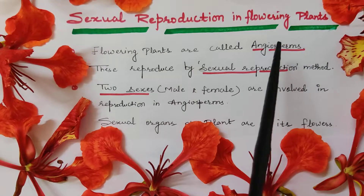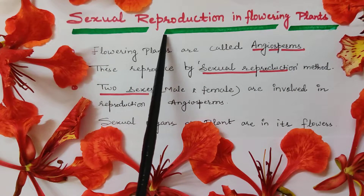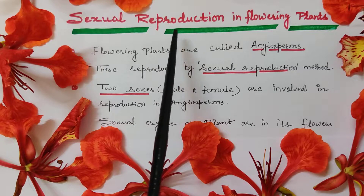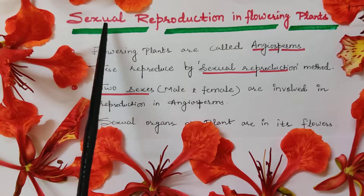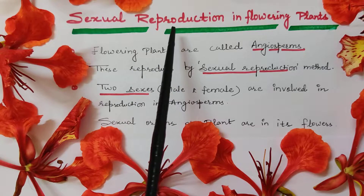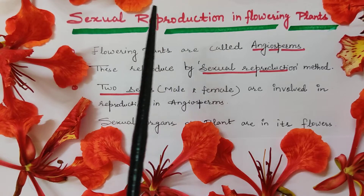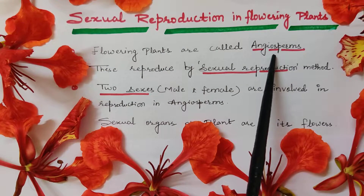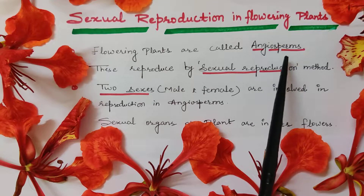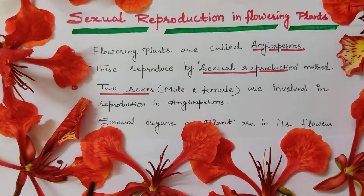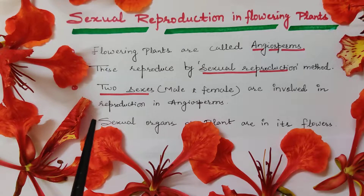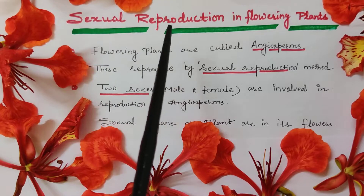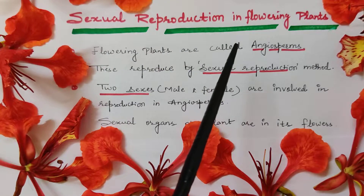How do Angiosperms reproduce? They reproduce by sexual reproduction. Two sexes are involved: male and female. In Angiosperms, the sexual organs are present in their flowers. So the male sex organ and female sex organ are present within the flower, meaning the flower plays a very important role in the sexual mode of reproduction in Angiosperms.